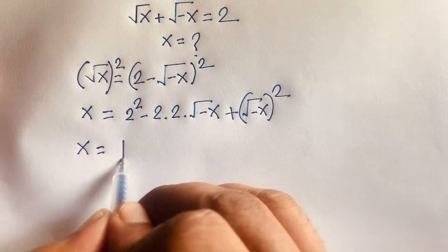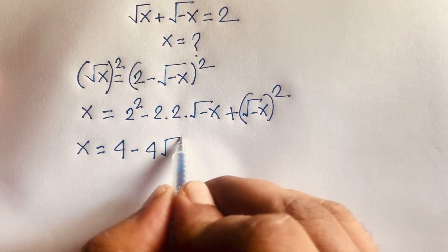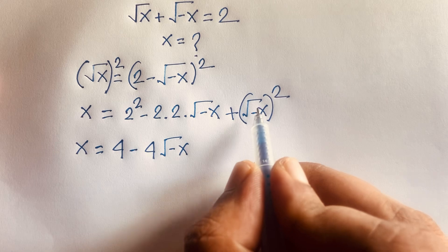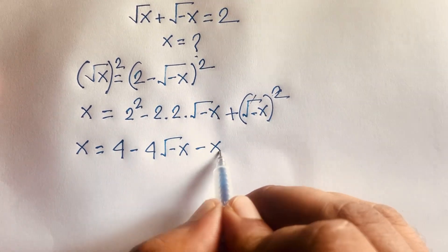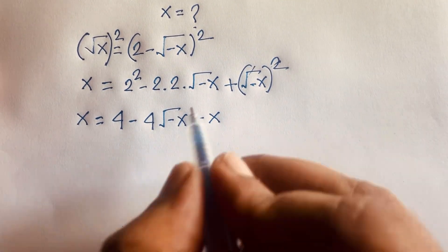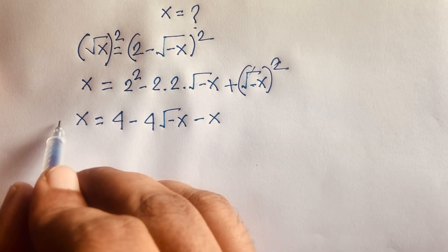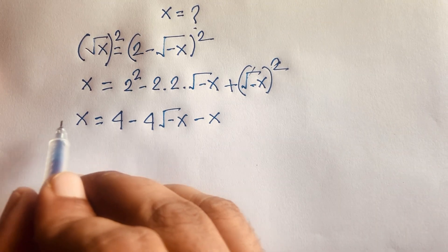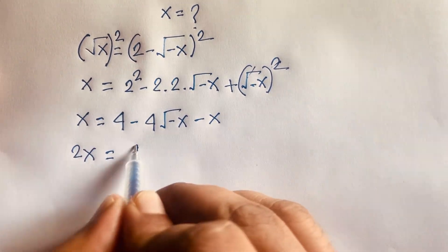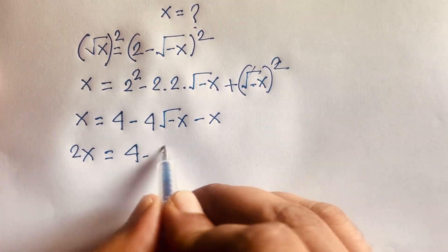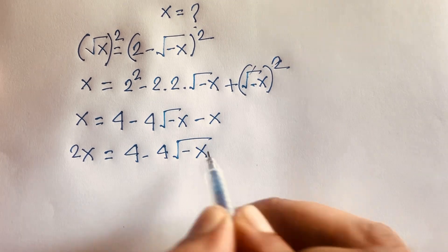This gives x equals 4 minus 4 times square root of negative x, plus negative x. Moving the negative x to the left side makes it positive x, so x plus x equals 2x, giving us 2x equals 4 minus 4 times square root of negative x.